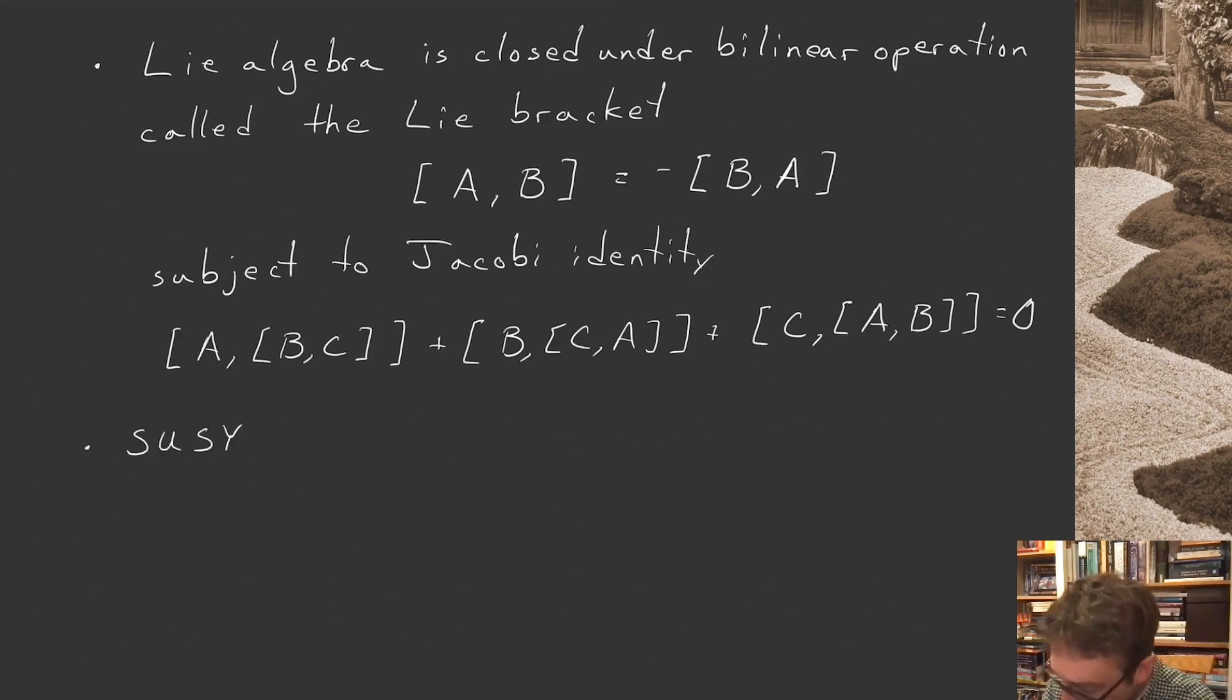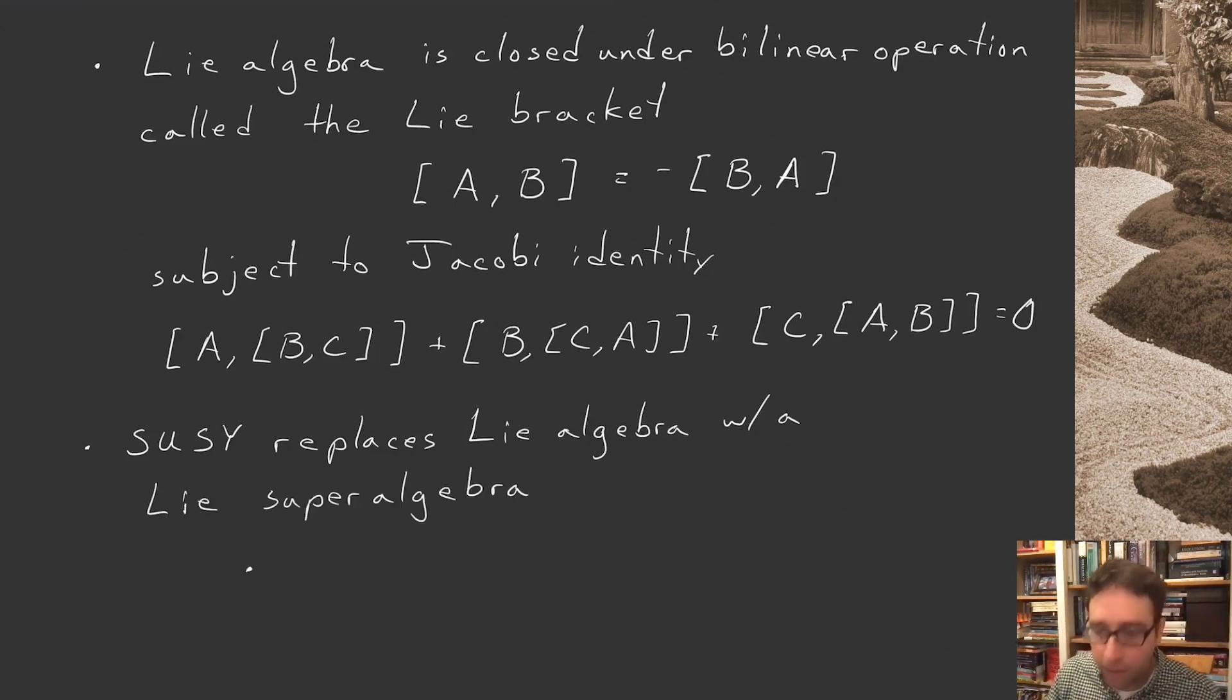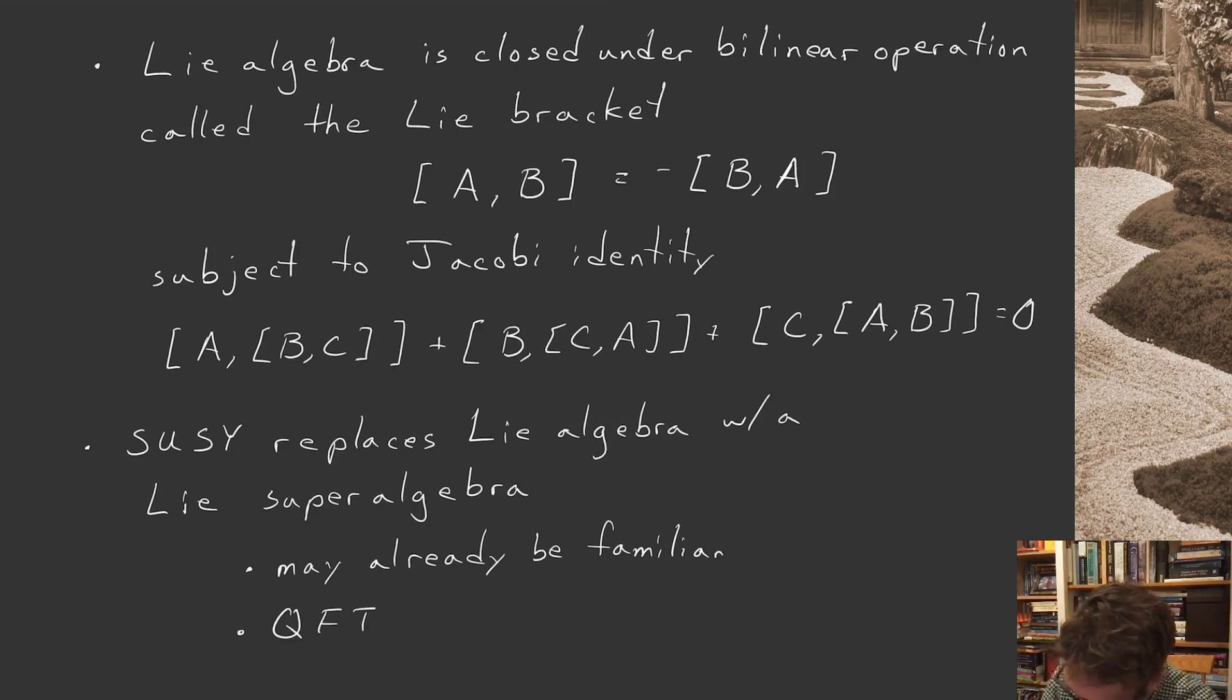And supersymmetry is a bit different. SUSY replaces the Lie algebra with something else. Let's call it a Lie super algebra. And you may already know about this. And why do I say this? Well, if you've studied quantum mechanics or quantum field theory, you've seen fermions and bosons. And while the operators associated with bosons, you tend to do things like commute them, the operators associated with fermions, you anti-commute them. And that's the difference, that the Lie algebra has not just a commutator, but also an anti-commutator.